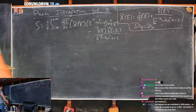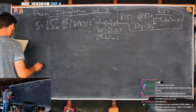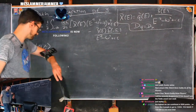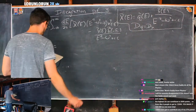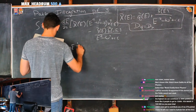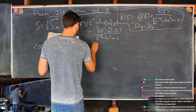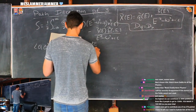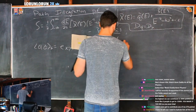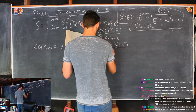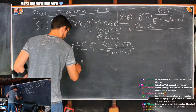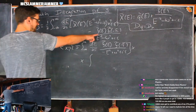The action S equals one half times the integral from negative infinity to positive infinity of DE over two pi: X-tilde(E) times E squared minus omega squared plus i-epsilon times X-tilde(-E), minus F-tilde(E) F-tilde(-E) divided by E squared minus omega squared plus i-epsilon.